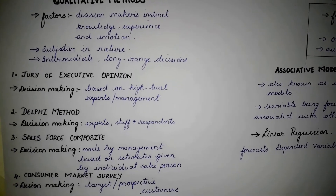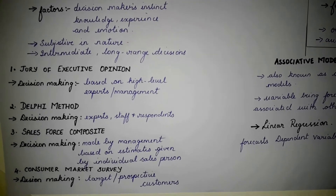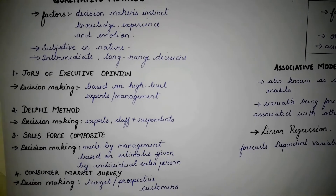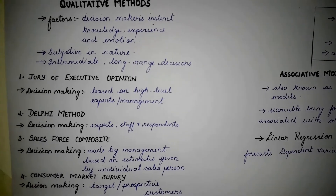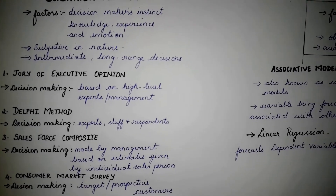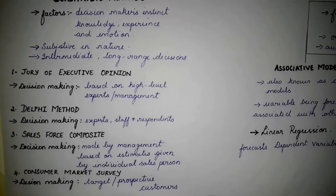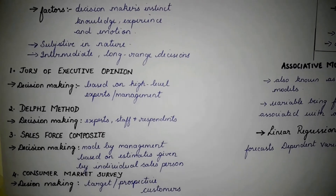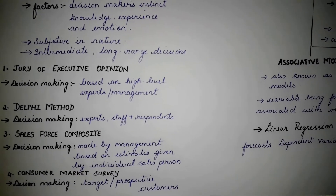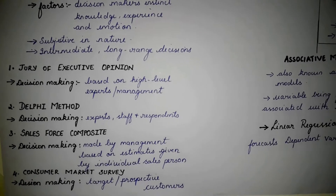Some of the qualitative methods are: jury of executive opinion. In this method, the opinion of high-level experts or top-level management is taken, and based on this, a forecast value is developed.